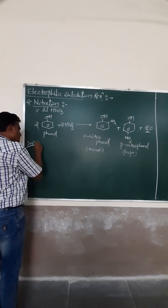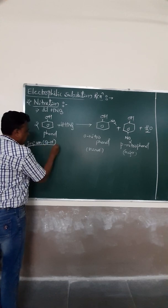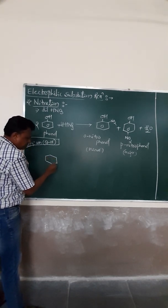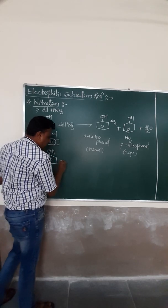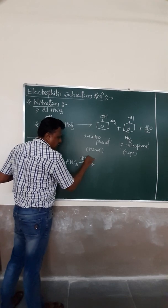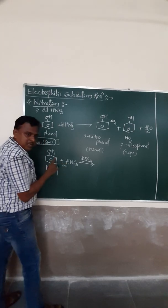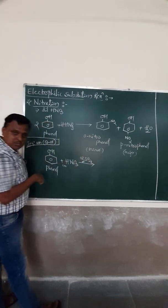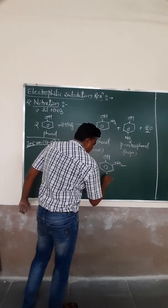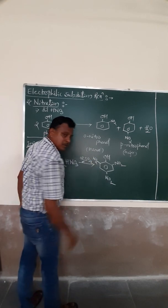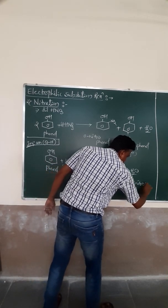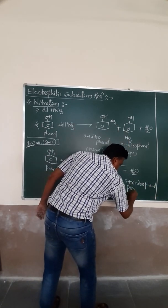There is a very important reaction that is asked frequently in annual examinations. When phenol reacts with concentrated nitric acid in the presence of sulphuric acid — this mixture is called the nitrating mixture — it forms a single product with the release of water. The product is 2,4,6-trinitrophenol, commonly known as picric acid.